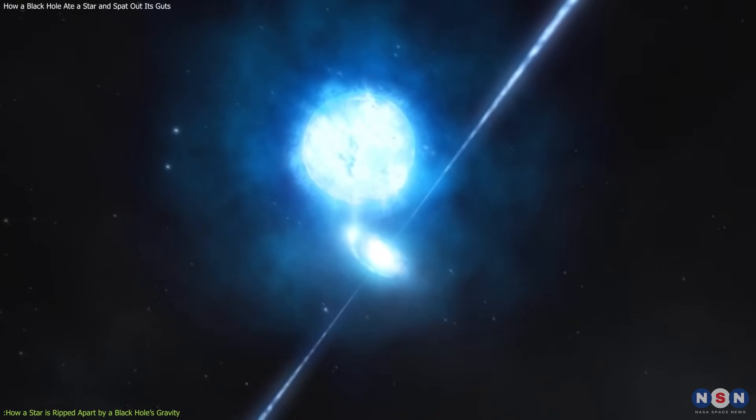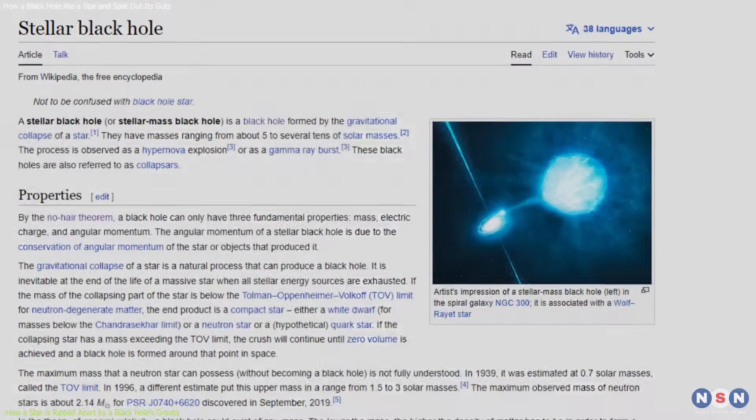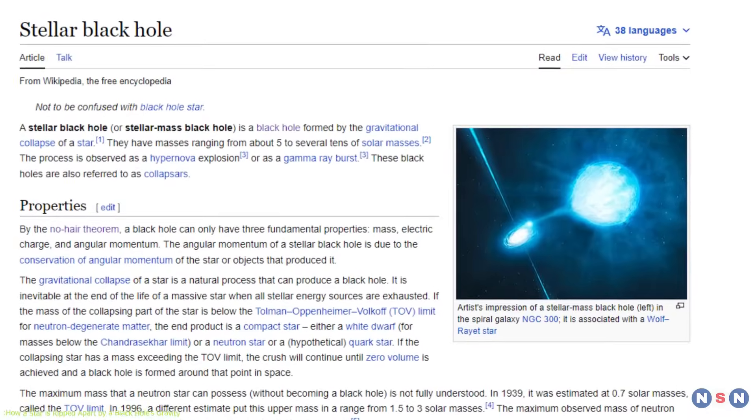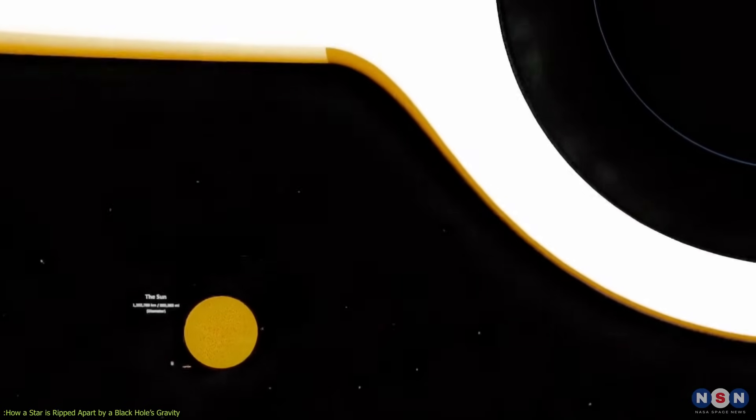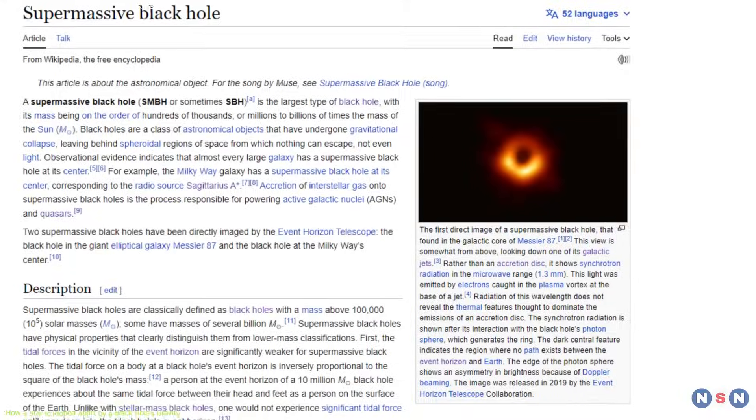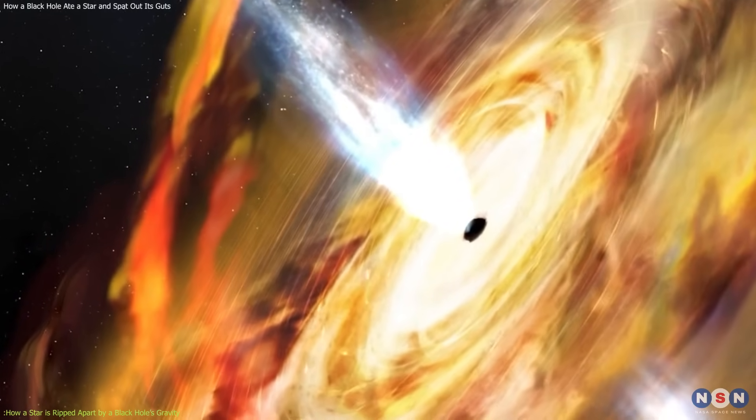Some black holes are relatively small, with masses of a few times that of the Sun. These are called stellar-mass black holes. Other black holes are much larger, with masses of millions or billions of times that of the Sun. These are called supermassive black holes, and they are usually found at the centers of galaxies.